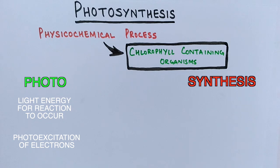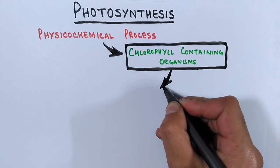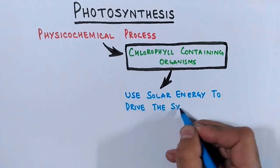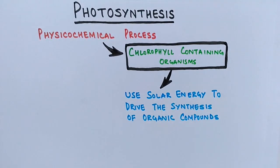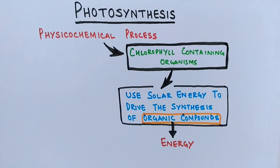So 'photo' involves the trapping and harnessing of solar energy, and 'synthesis' refers to using that energy to drive the production of organic compounds like glucose in plants. From these organic compounds, we get energy, and some portion is used for other physiological processes as well.